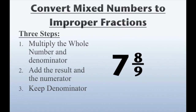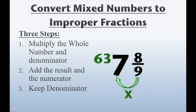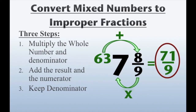How about 7 and 8 ninths? Same procedure. Step 1: multiply the whole number and the denominator. Our denominator here is 9, our whole number is 7 — 9 times 7 gives us 63. Step 2: add the result and the numerator. That's 63 plus 8, that's going to give us 71. And then step 3, keep our denominator, which is going to be 9, so our answer is 71 over 9. That means 7 and 8 ninths as a mixed number is equal to 71 ninths as an improper fraction.